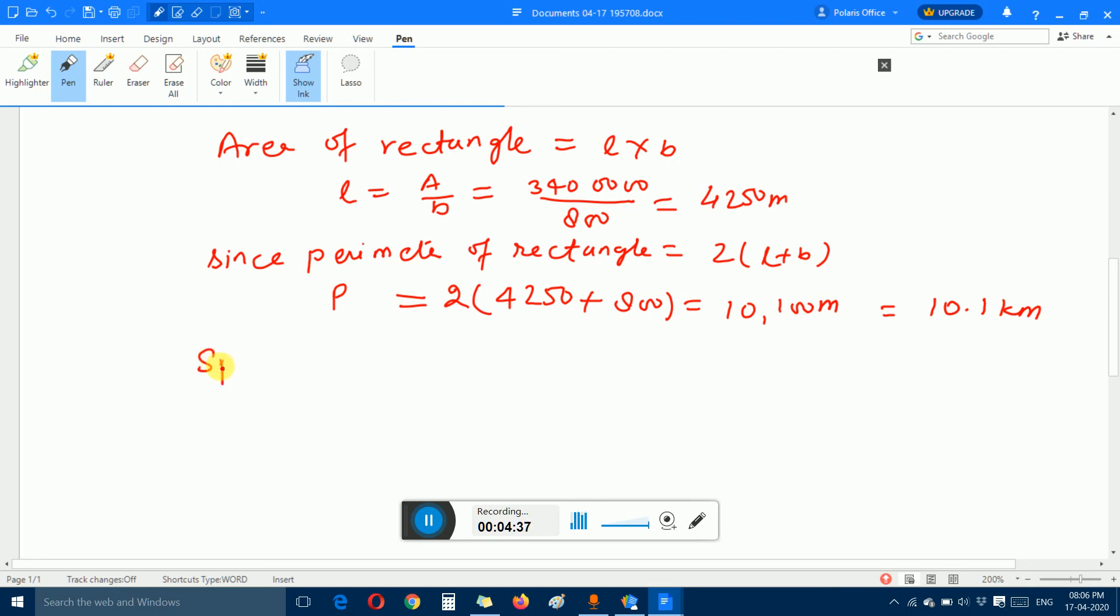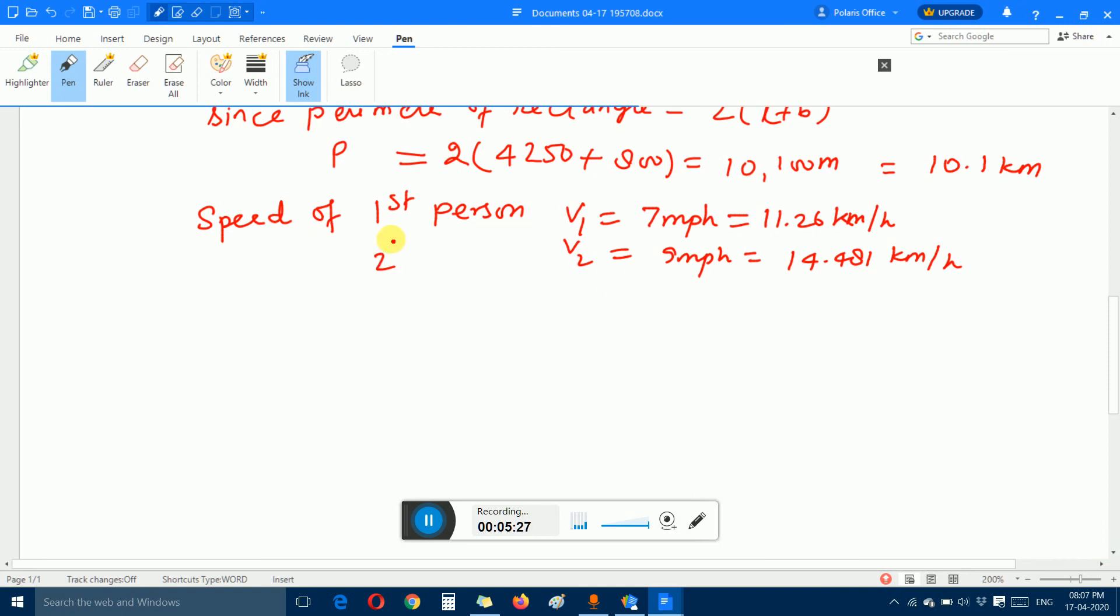Since the speed of the first person, V1, equals 7 mph, that equals 11.26 kilometers per hour. And for V2, 9 miles per hour equals 14.481 kilometers per hour for the second person.